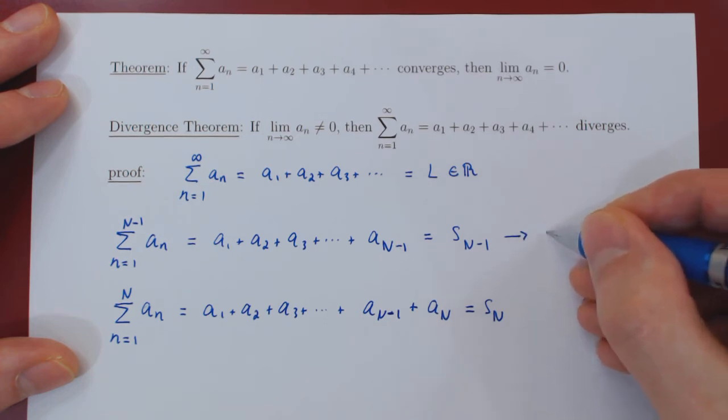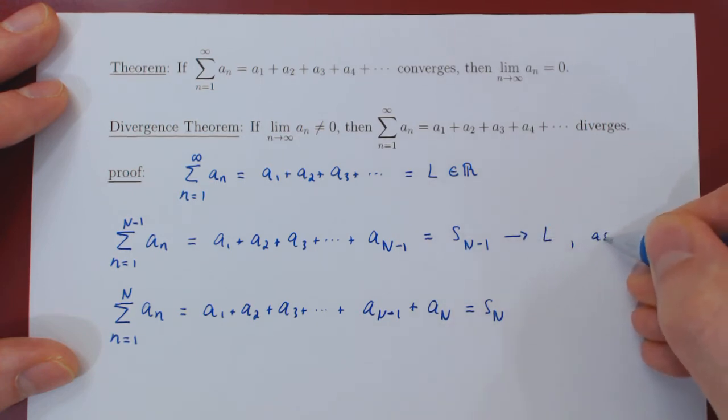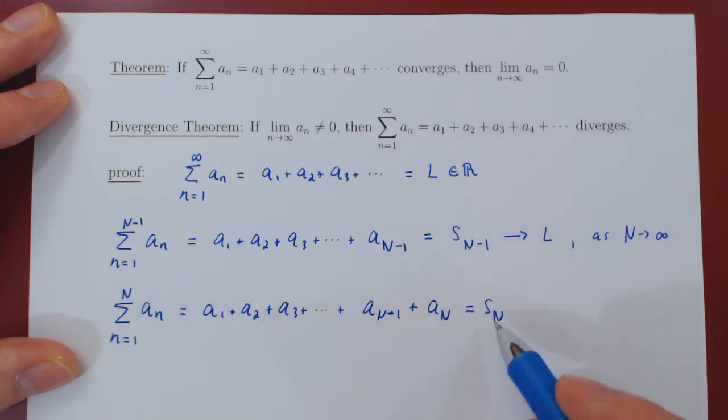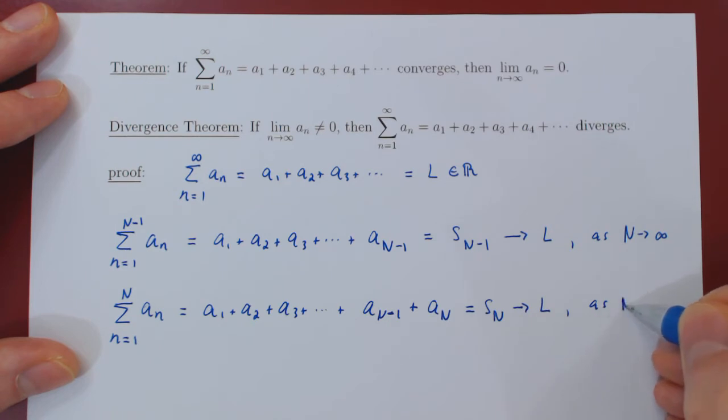so they will converge to L. So S_{N-1} converges to L as N goes to infinity. And S_N will also converge to L as uppercase N tends to infinity.